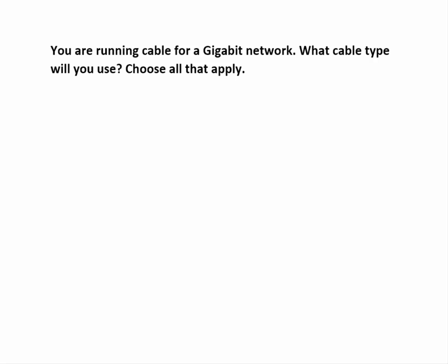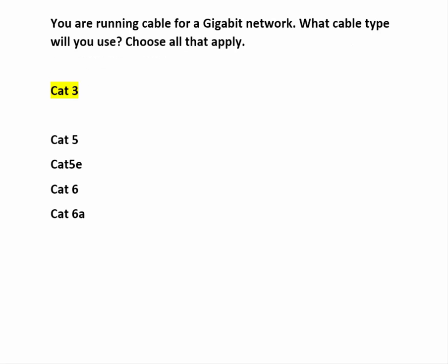The last question in this group is: you're running a cable for a gigabit network — what cable type will you use? Choose all that apply. We can see from the responses that CAT3 can support a maximum speed of 10 Mbps. CAT5 is not recommended in gigabit applications; it supports a bandwidth of 100 MHz or 10BaseTX.